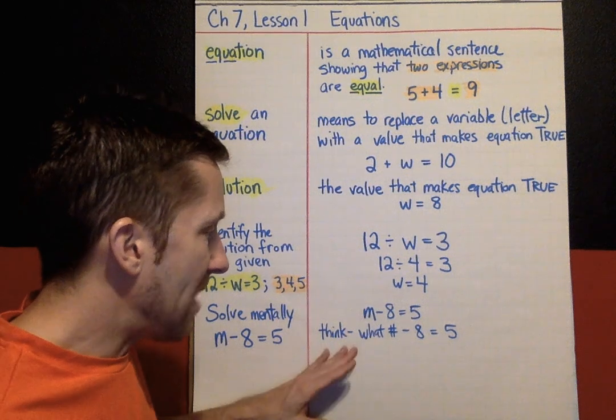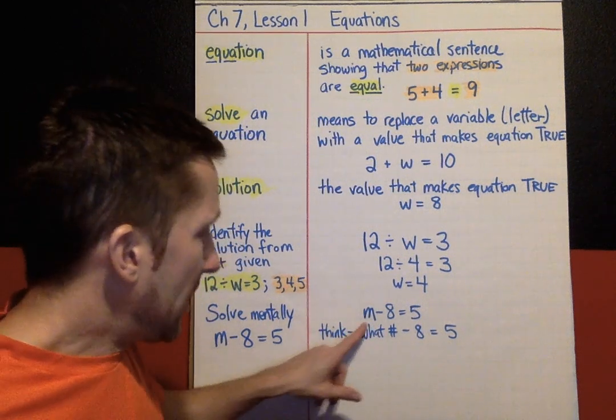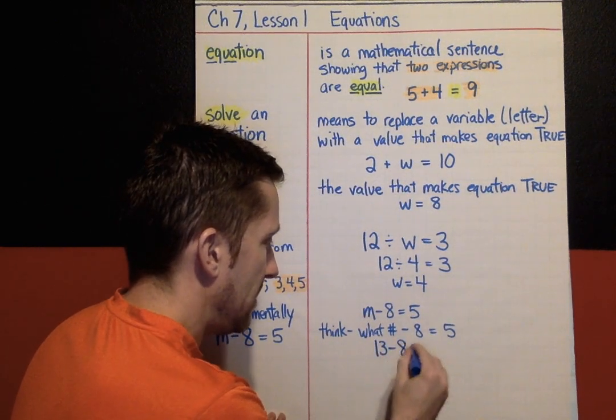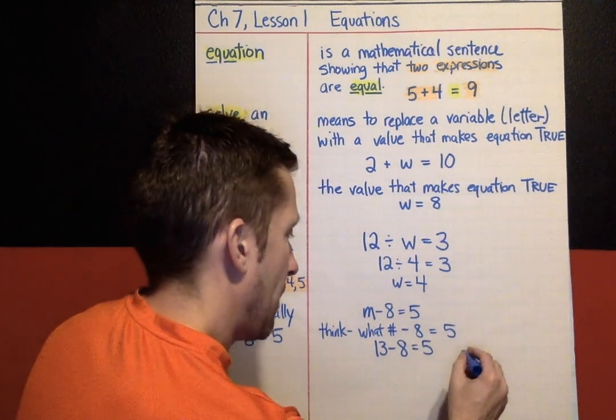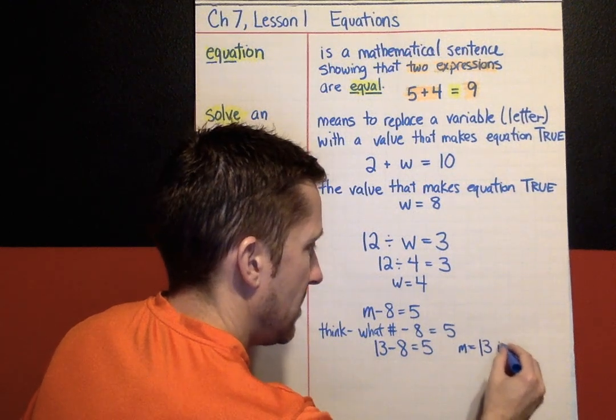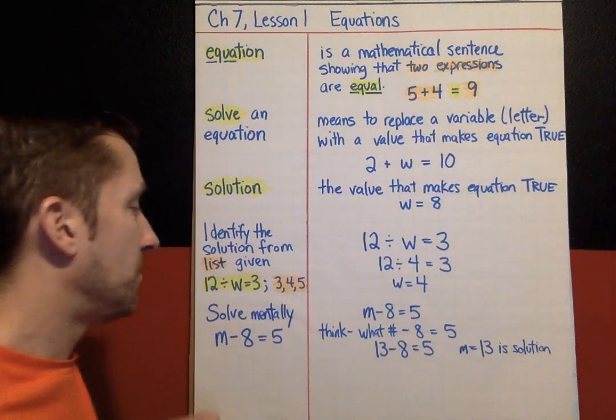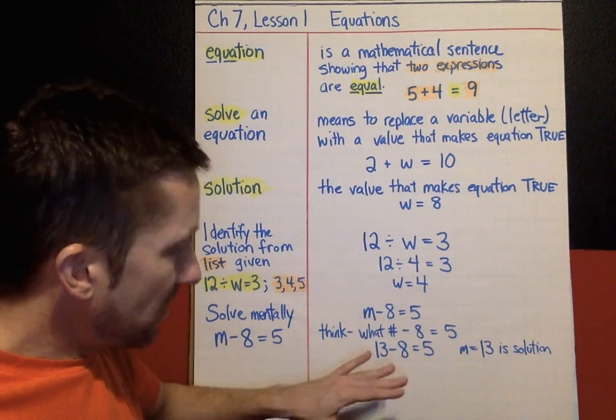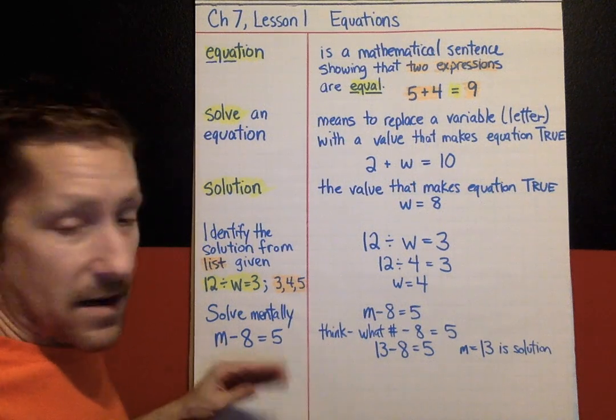Most of you can probably figure that out. You can use guess and check. But the answer that does work is 13. 13 minus 8 equals 5. So, M equals 13 is the solution. That's the value that makes the equation true. As we move on in Chapter 7, we're going to learn the formal process for figuring these out. Today, though, we're doing it mentally.